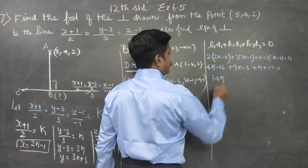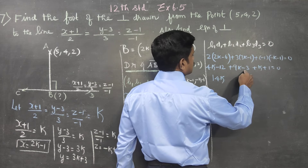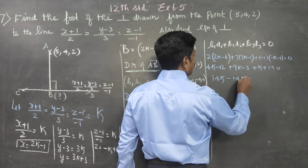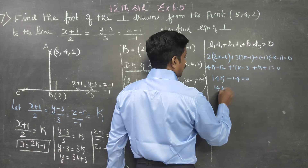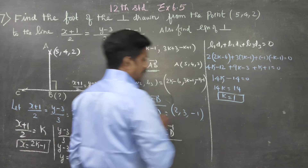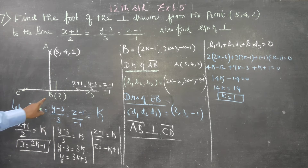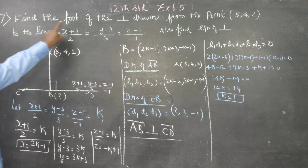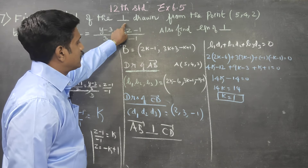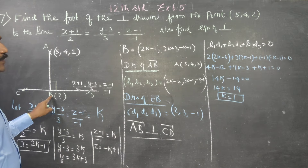So 14k - 14 = 0, therefore 14k = 14, which gives k = 1. After finding the value of k, substitute it into point B because we are asked to find the foot of the perpendicular. k = 1 is substituted into point B.